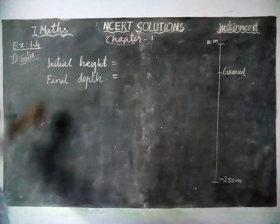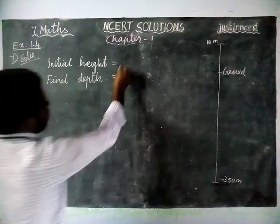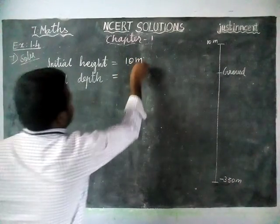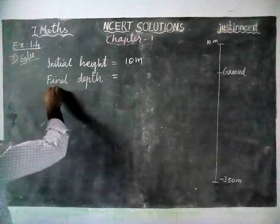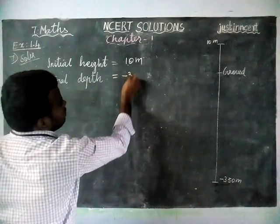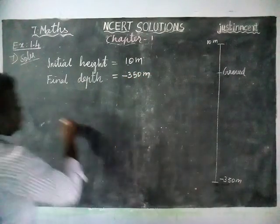Now we are going to solve it. The initial height is equal to 10 meters, and the final depth is equal to minus 350 meters.